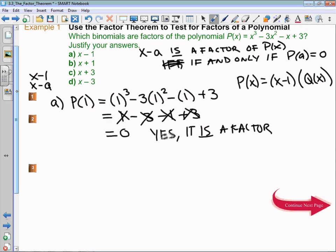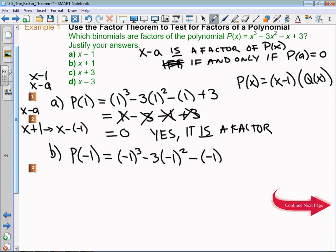For part b, we're going to check x plus 1. It's very important to recognize that if we look at x plus 1 and want it in that x minus a form, we can rewrite it as x minus negative 1. So to check if x plus 1 is a factor of P(x), I'm going to evaluate P at negative 1. That's negative 1 cubed minus 3 times negative 1 squared minus negative 1 plus 3, which is negative 1 minus 3 plus 1 plus 3, and it equals 0. So yes, x plus 1 is a factor.